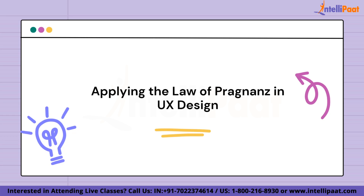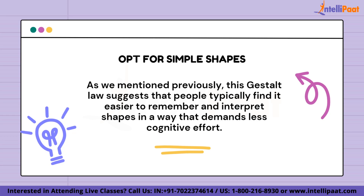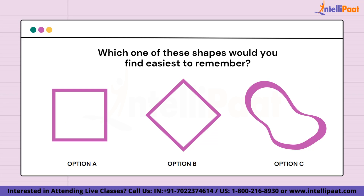Now let's look at how this can be applied practically in design. Number one: opt for simple shapes. The Gestalt law suggests that people typically find it easier to remember and interpret shapes that demand less cognitive effort — meaning your mind wants to see something simple. It implies that people find it less demanding to identify and remember a square compared to an abstract figure. When shown different shapes, people will typically find the simpler shape the least demanding to recall.